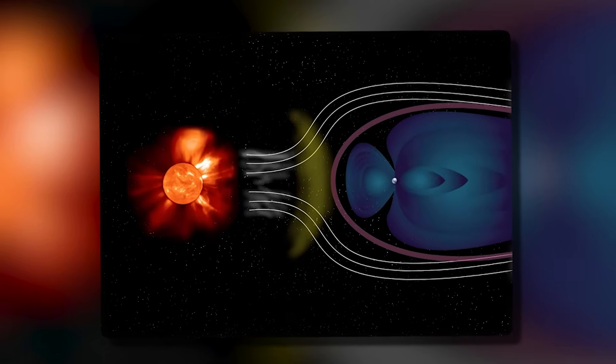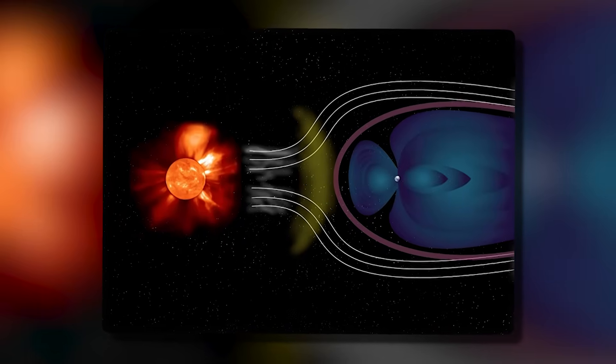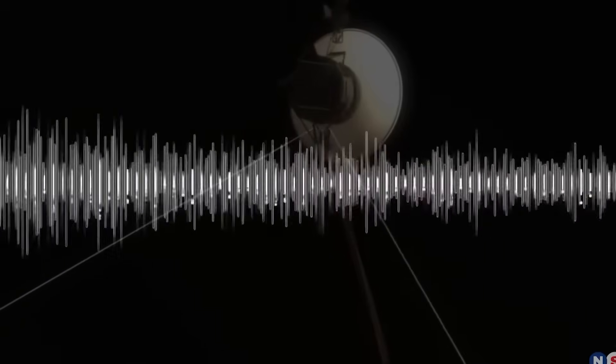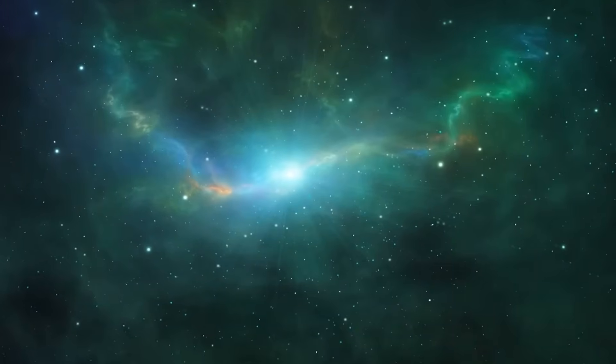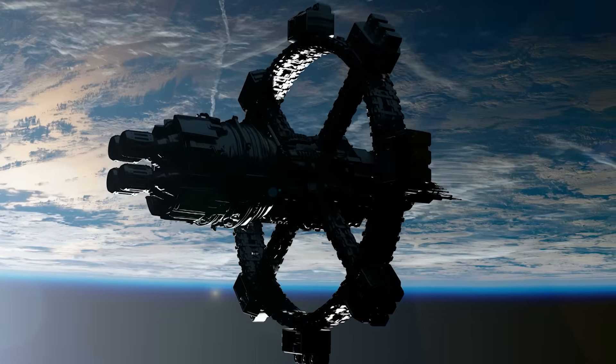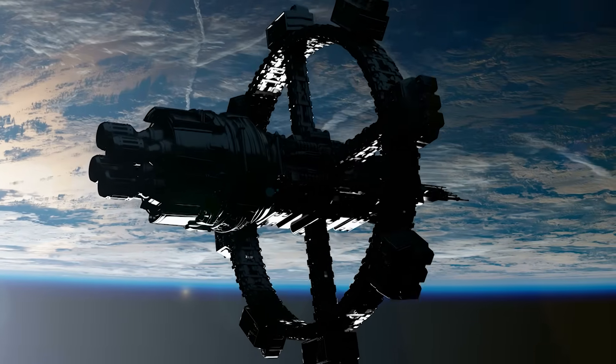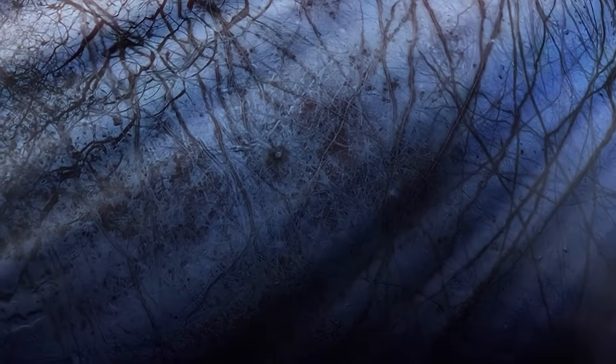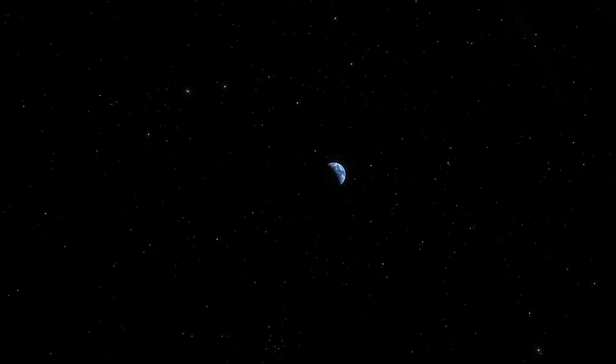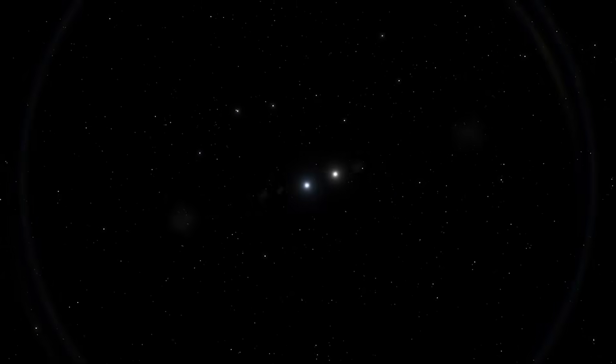The detection began with an unusual fluctuation in magnetic field data, something Voyager hadn't encountered before in the thousands of hours it had been recording the calm and consistent patterns of interstellar space. Normally, interstellar magnetic fields are subtle and stable, slowly varying as the spacecraft continues its trajectory. But these readings weren't gradual, they were jagged, intense, and disturbingly rhythmic. The changes occurred at regular intervals, too precise to be natural but too irregular to be mechanical in the conventional sense.